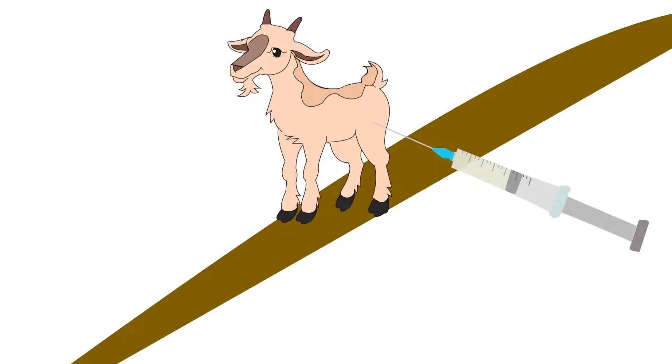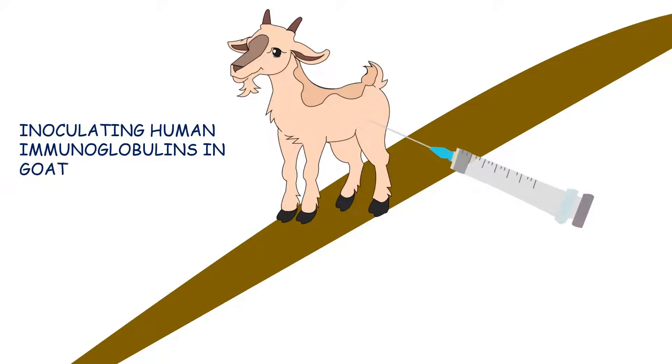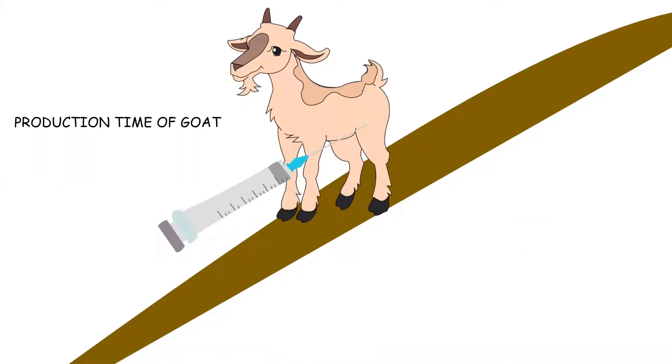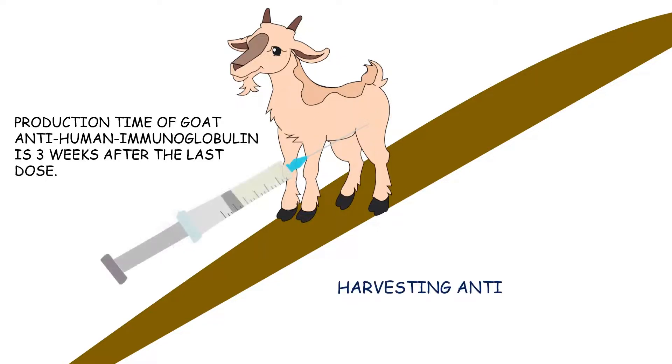Next step being same as for direct immunofluorescence involves inoculating human immunoglobulins in goat. Two doses are given with six weeks interval between doses. The production time of goat anti-human immunoglobulin is three weeks after the last dose.